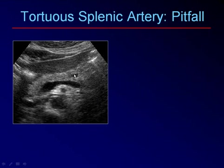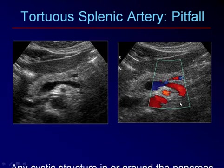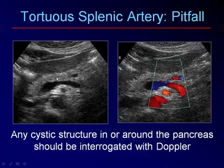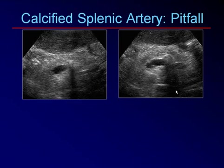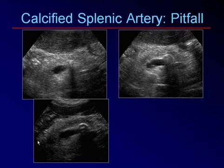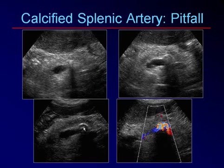If you ever see a small cystic mass in the pancreas, first consider whether it could be a loop of the splenic artery weaving in and out. Turn on the Doppler — it may simply be the splenic artery. Any cystic structure in or around the pancreas should be interrogated with color Doppler. The same applies to a small calcification: if you see a calcified rounded mass with shadowing in the body of the gland, turn on the color, because this could be the tortuous, calcified splenic artery — not a calcified mass within the pancreas itself.